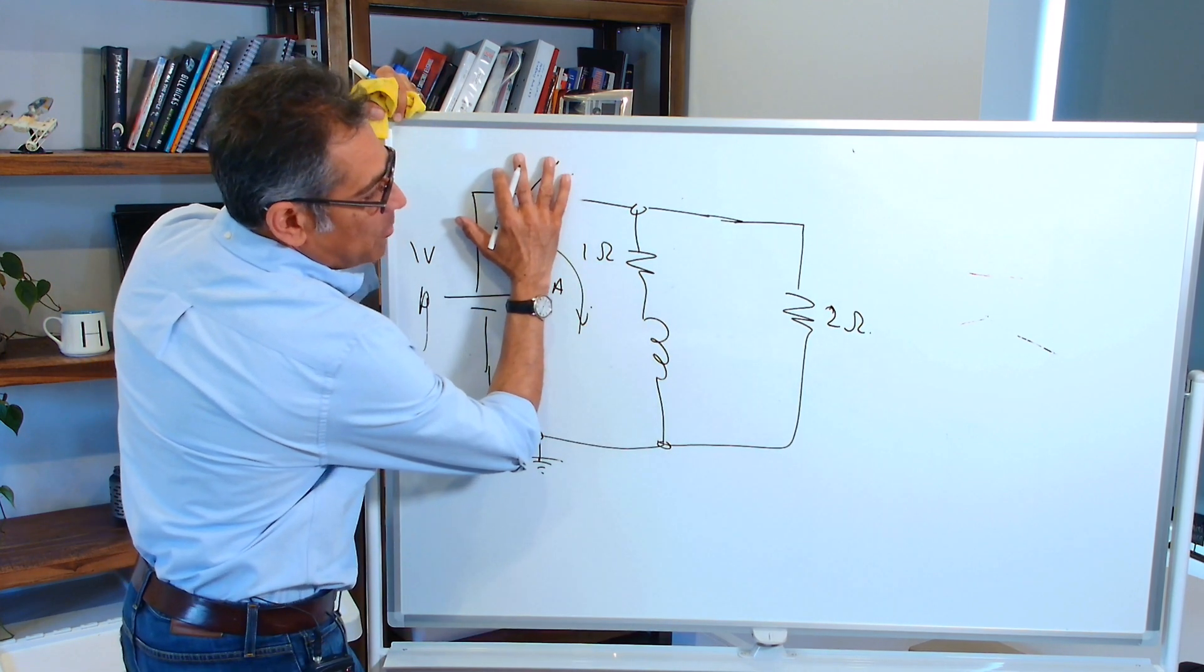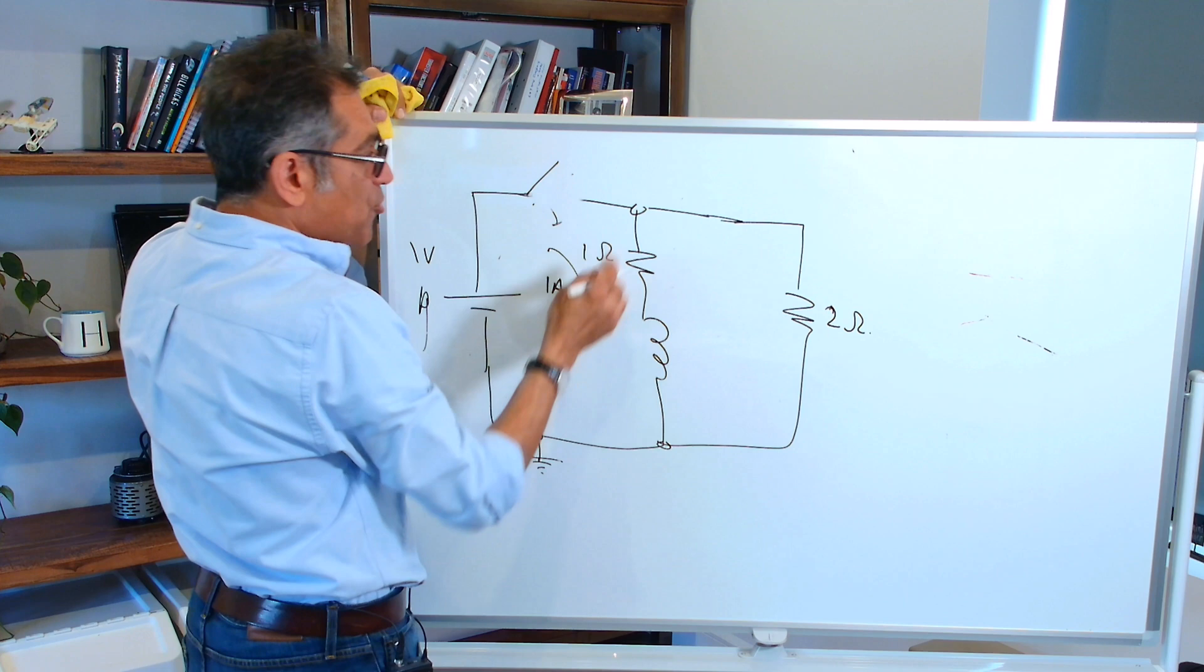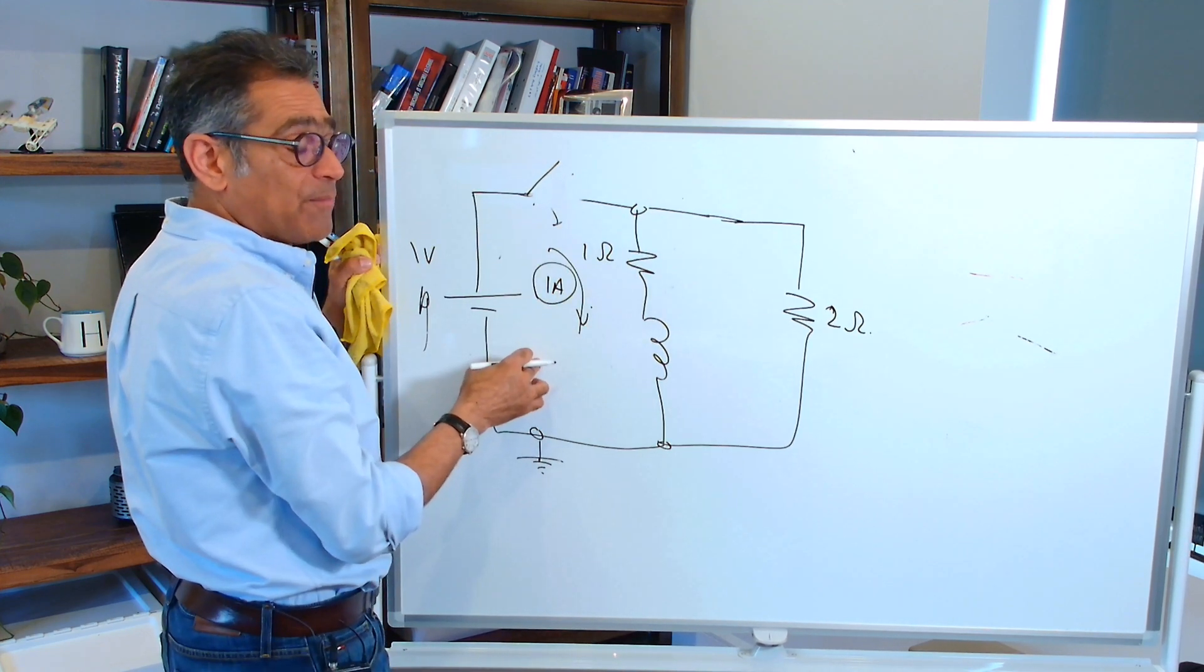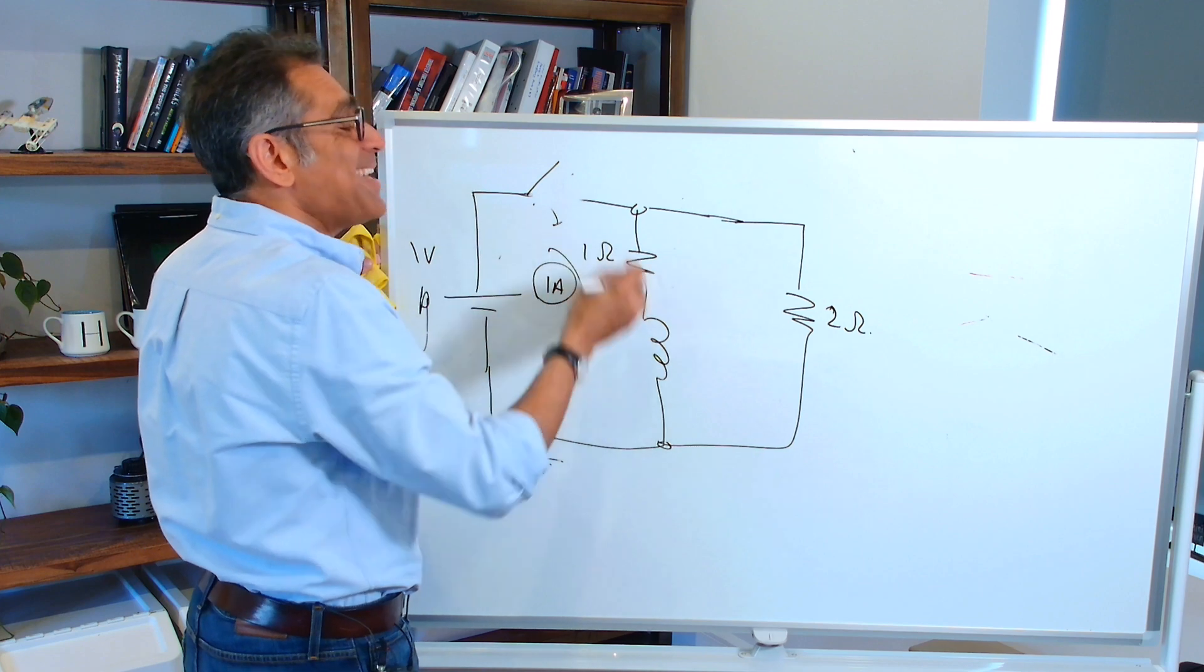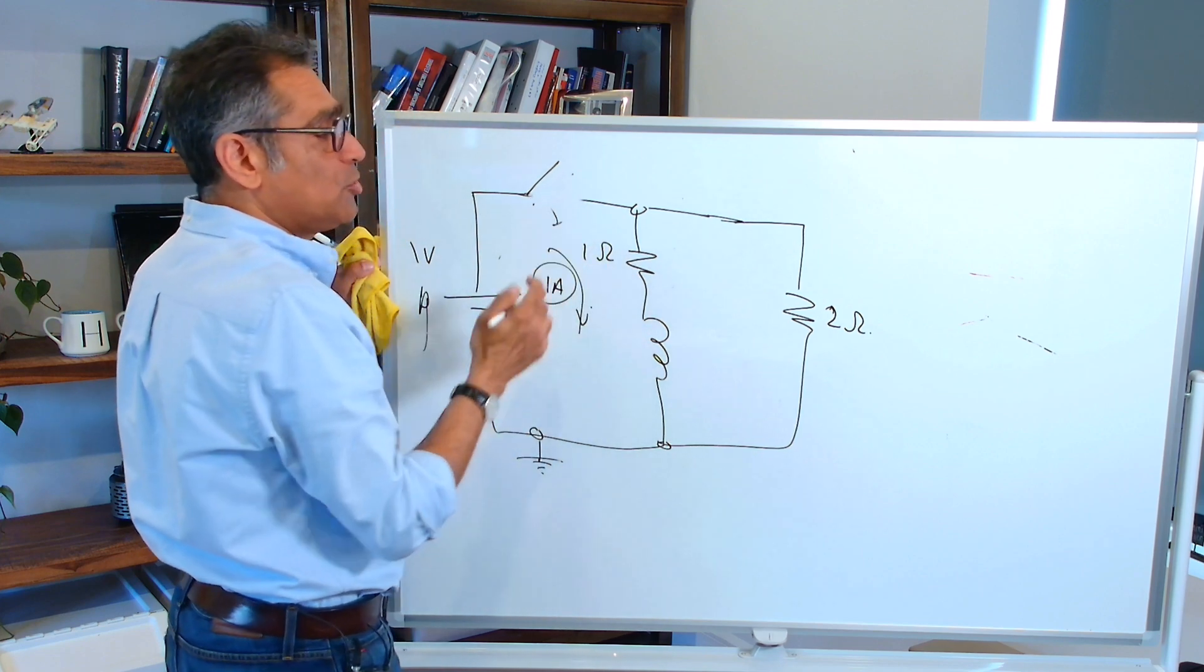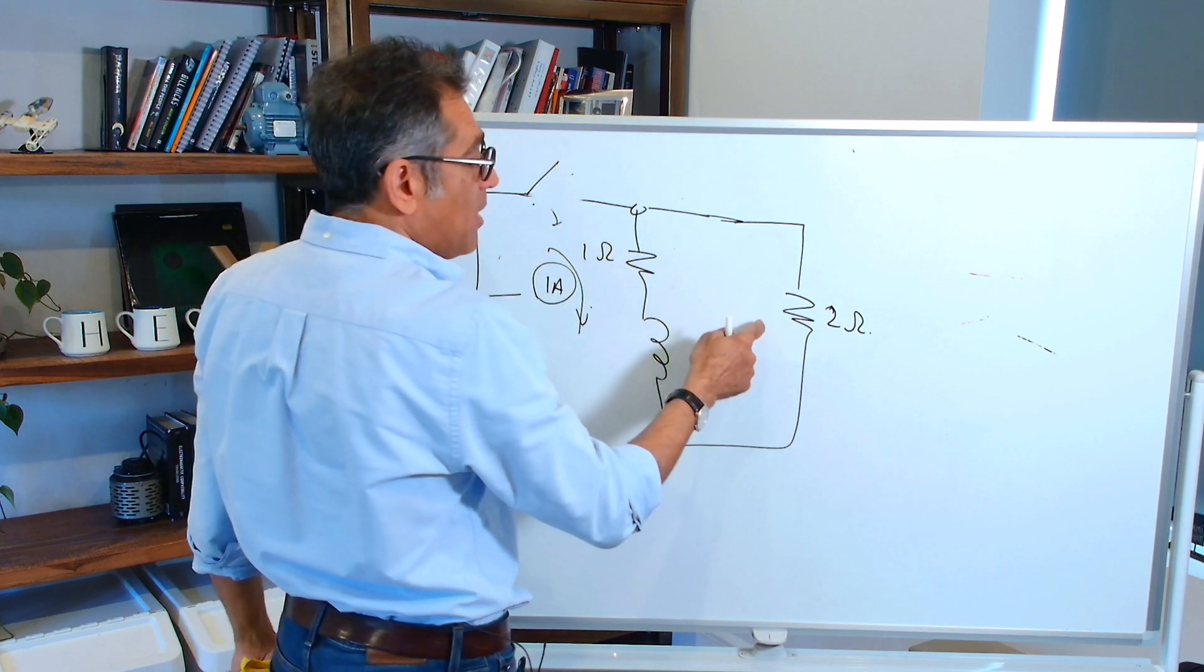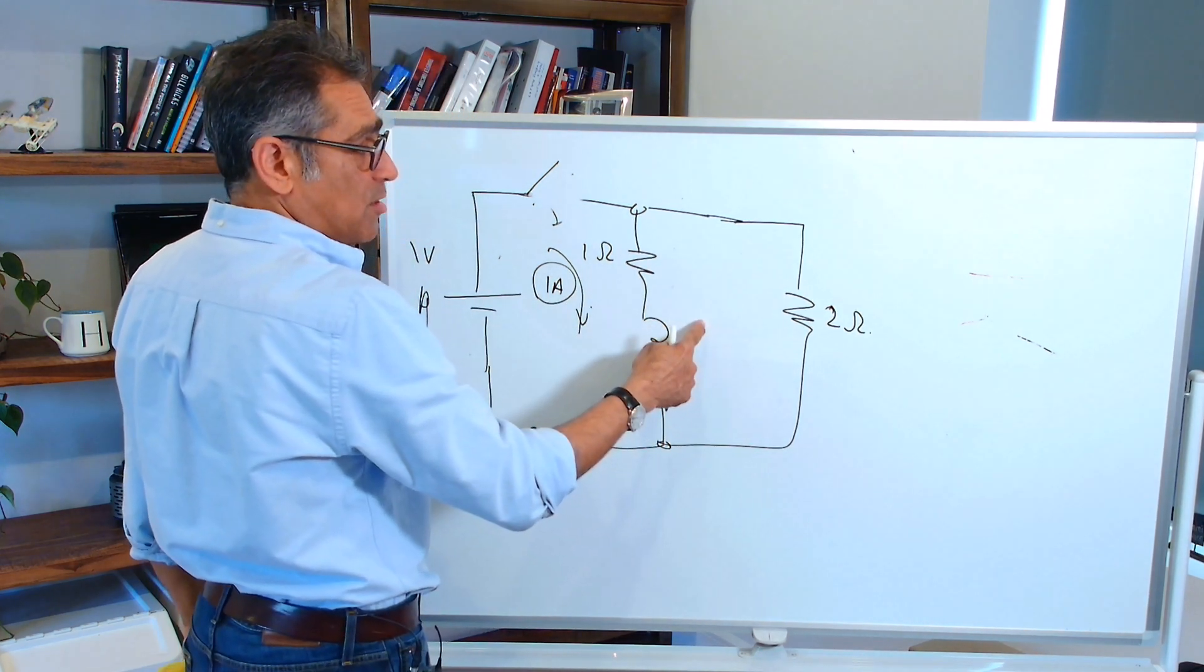So this bit goes out of the picture. Now, prior to me opening this and closing that, I had one amp flowing. The inductor wants one amp to continue to flow. But before it had one ohm worth of resistance. But now it has got three ohms worth of resistance.